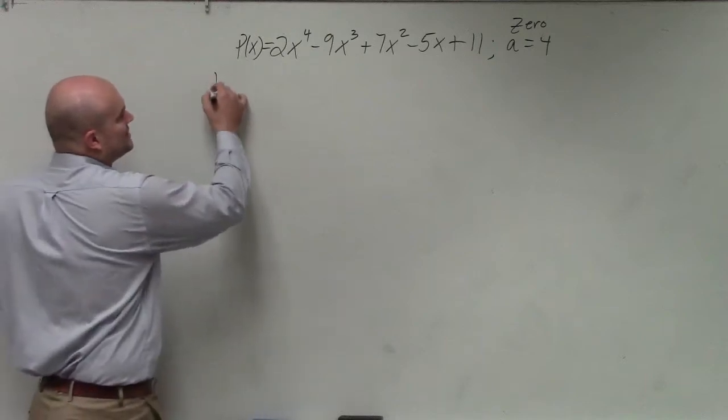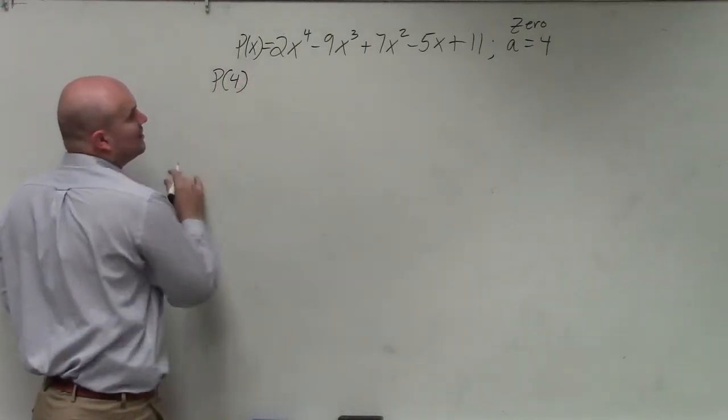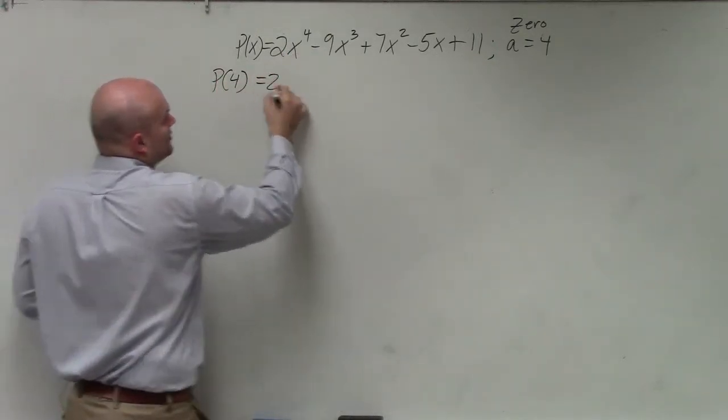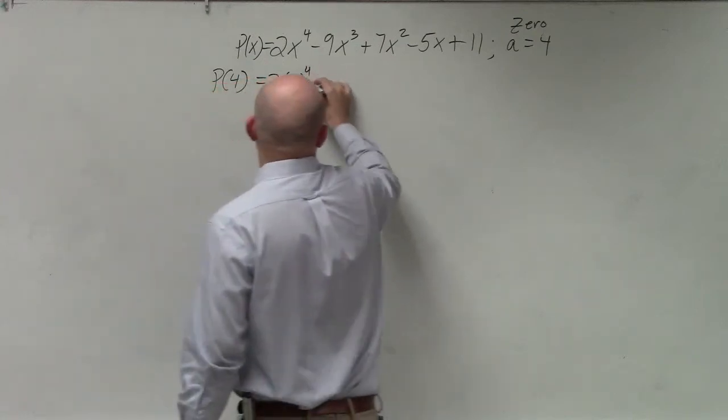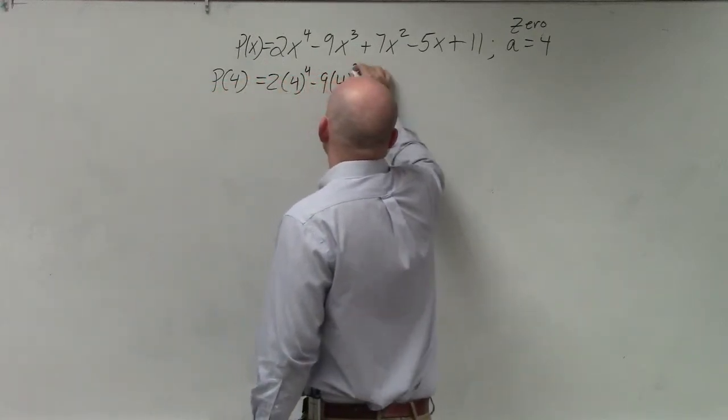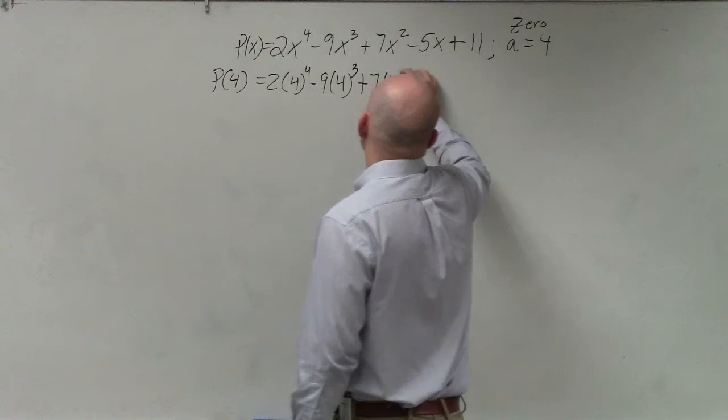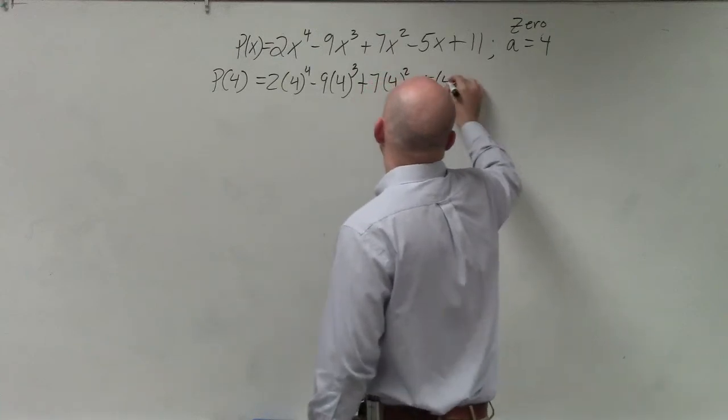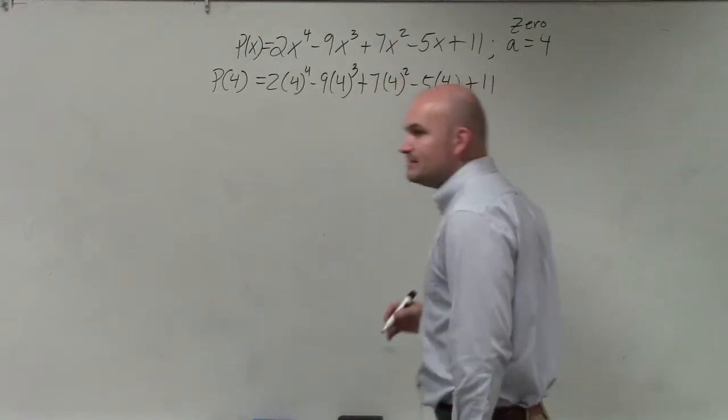So all you simply need to do is just do p of 4. So wherever there is an x, you're now going to replace that with a 4. And that's simply all you need to do.